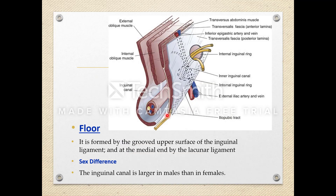The floor of the inguinal canal is formed by the grooved upper surface of the inguinal ligament, and at the medial end by the lacunar ligament. The inguinal canal is larger in males than in females.